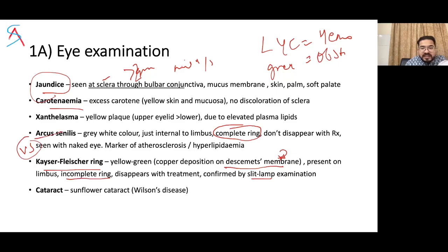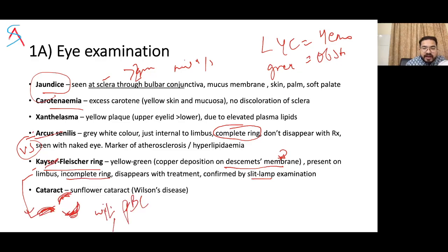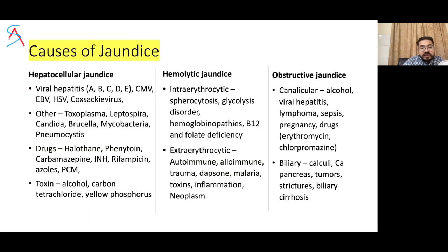A very important exam question is the difference between arcus senilis and the Kayser-Fleischer ring. Arcus senilis is seen in middle or old age and forms a complete ring; the KF ring initially starts on the superior part then inferior, forms an incomplete ring, and disappears with treatment. KF ring is due to Wilson's disease, primary biliary cirrhosis, cryptogenic cirrhosis, or intraocular copper body.